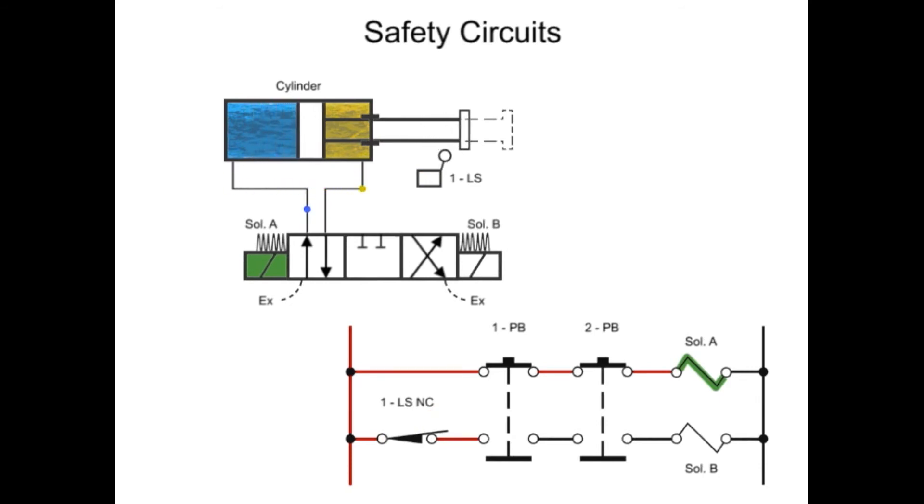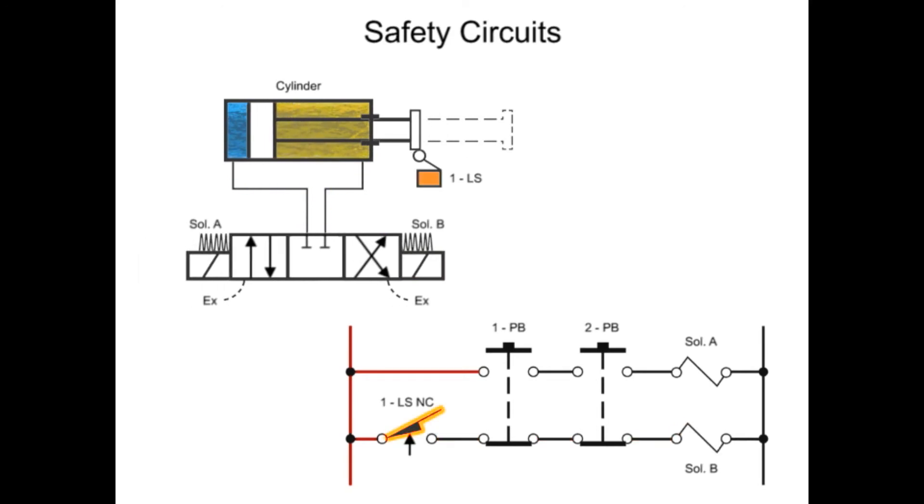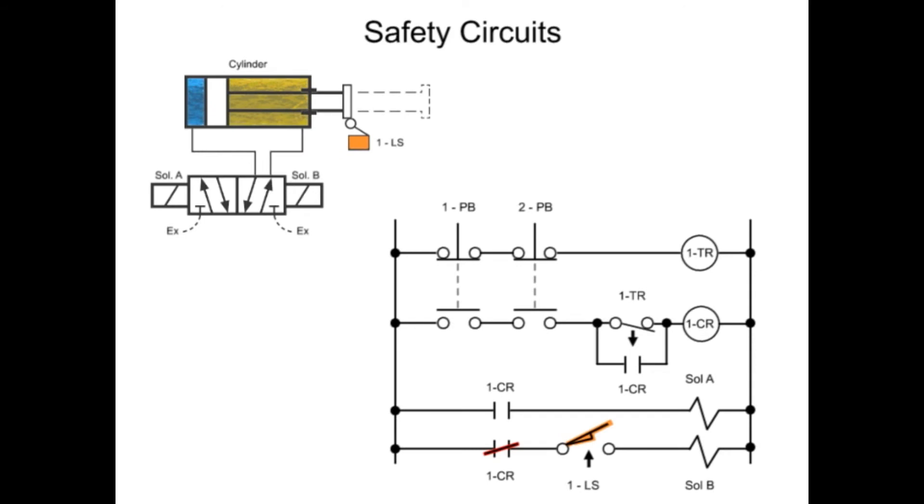If both buttons aren't released, the cylinder cannot move back to its starting point to restart the cycle. Another way to prevent tie-down is to utilize a double solenoid two-position valve. The valve is much simpler and less expensive, but requires a more complex circuit utilizing an off-delay timing relay, normally open-timed open-timer contact, a control relay, two solenoids, and a normally closed limit switch.